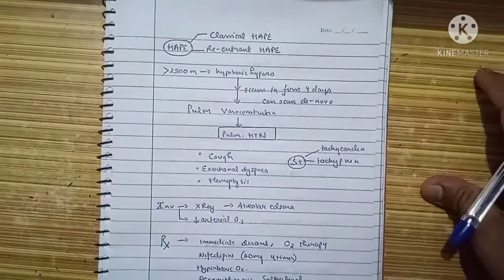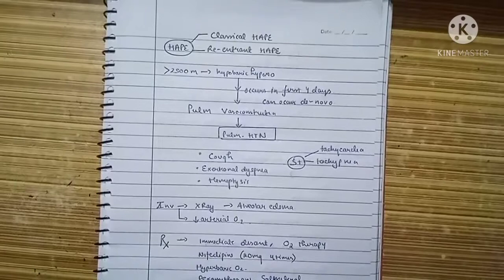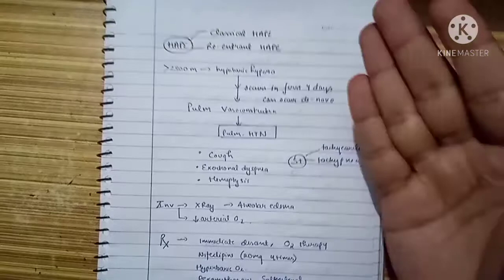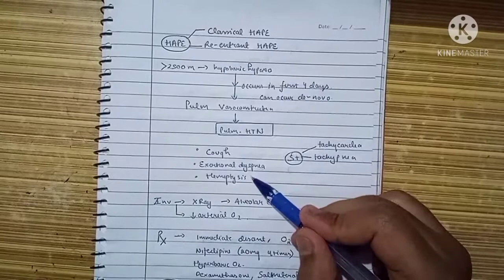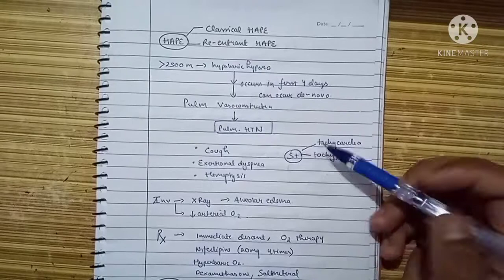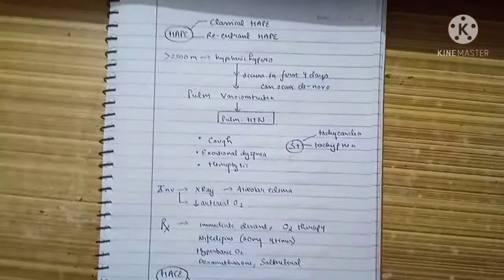The symptom complexes in HAPE are due to pulmonary hypertension. There will be dry cough, exertional dyspnea, and hemoptysis (blood in sputum). Because hypoxia also leads to sympathetic stimulation, the patient will have tachycardia and tachypnea.